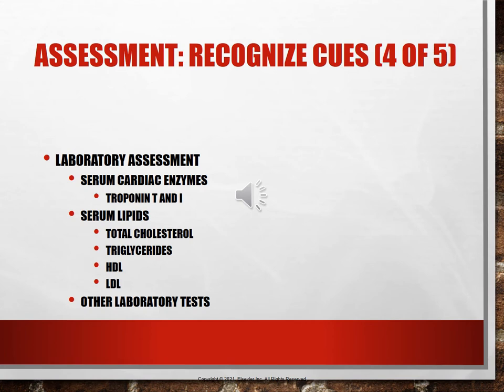Troponin T is treated aggressively because its presence increases the risk of death. Troponin I is only elevated during a myocardial infarction or injury. Myoglobin should be less than 90 — if troponin or myoglobin is elevated, this indicates a myocardial infarction.